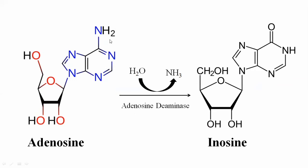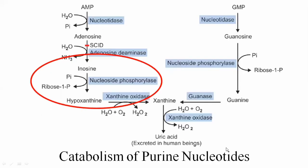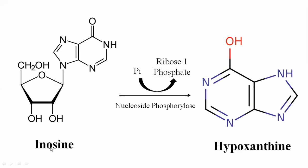After the removal of the amino group, in the presence of a water molecule, the amino group is replaced with an oxygen group — a keto group — by adenosine deaminase, forming inosine. Inosine then acts as a substrate for the enzyme nucleoside phosphorylase to form the product hypoxanthine.